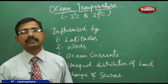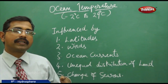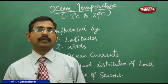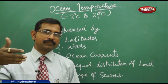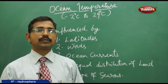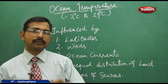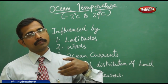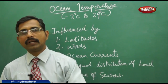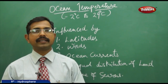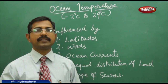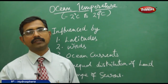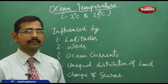Ocean temperature also has a vertical distribution. If you go deeper in the ocean, up to 5 kilometers the temperature changes very drastically, but beyond 5 kilometers it is very steady — around 2 degrees Celsius — and there is not much difference in the depth of the sea.